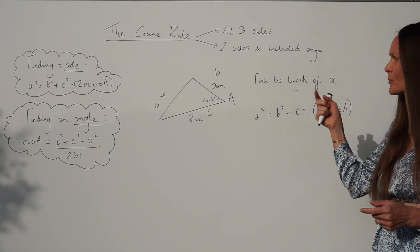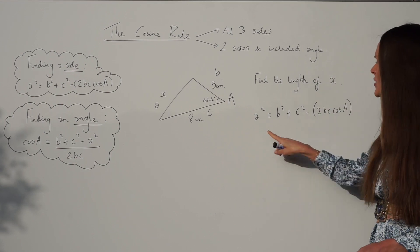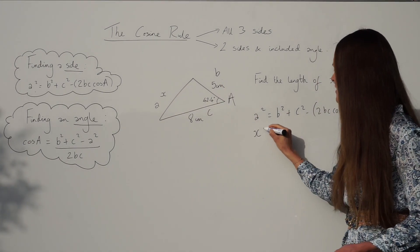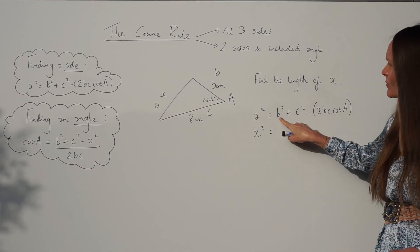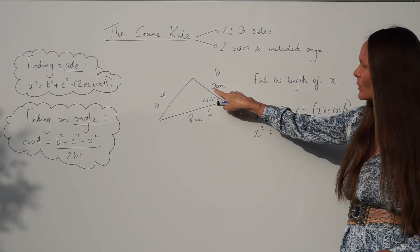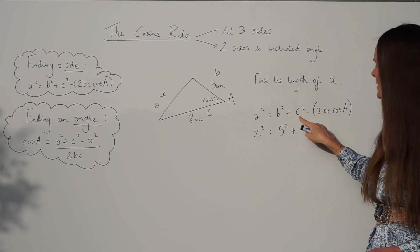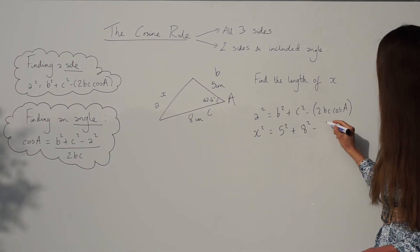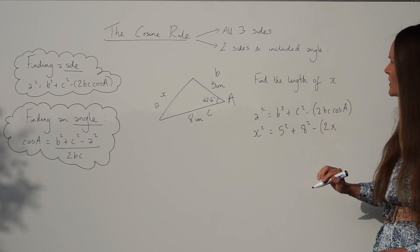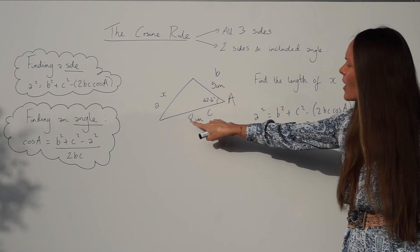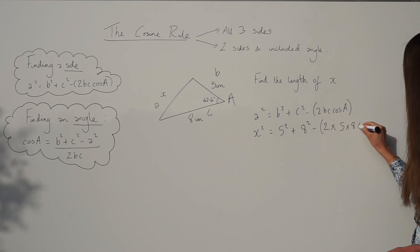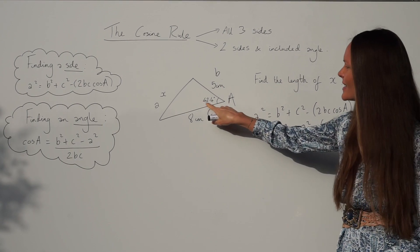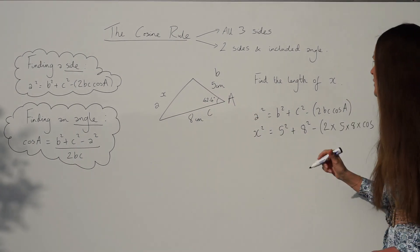And now I just need to substitute in the information given from the triangle. So little a is the same as X, so I can change that to x² instead. Instead of writing b² I can replace that with 5². Instead of c² we can replace it with 8². And then we have 2 times b times c. So 2 times 5 times 8 multiplied by cos capital A. And remember capital A is here, it's the angle. Okay, 42.4.